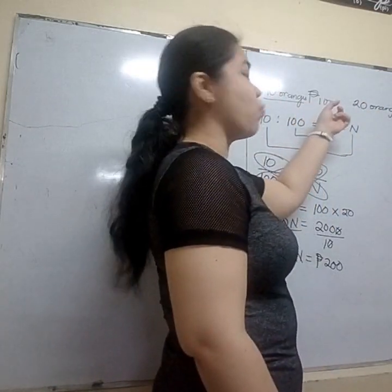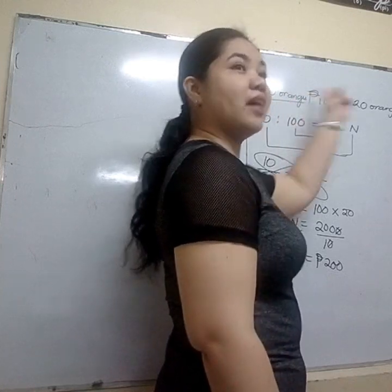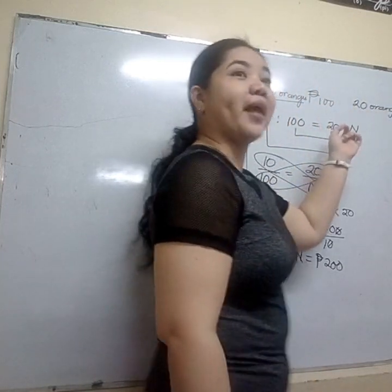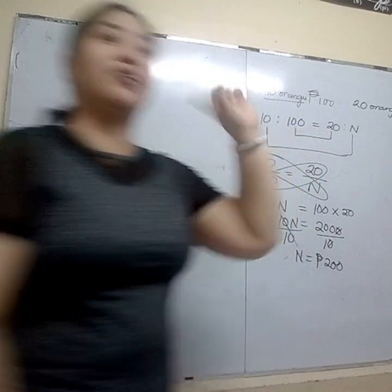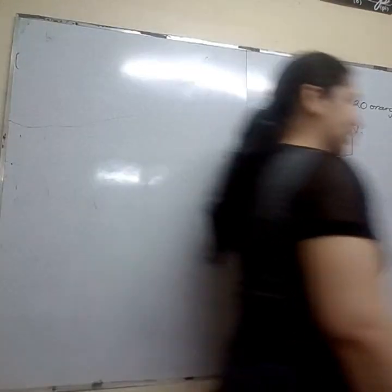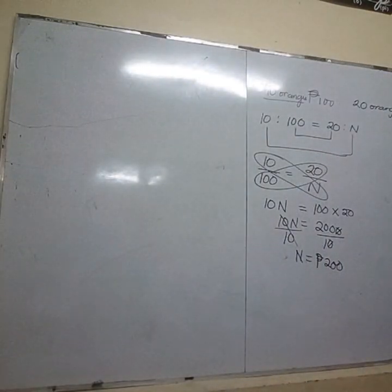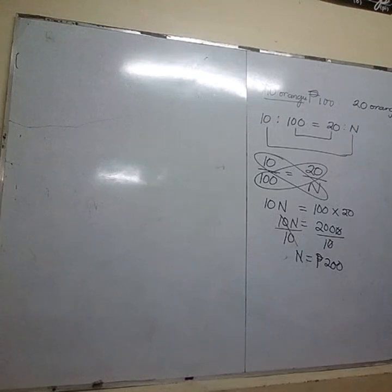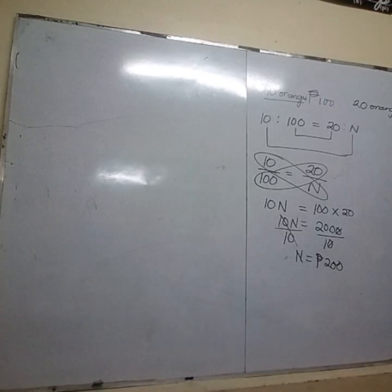The value increased — that's how direct proportion works. How about indirect? They are opposite of each other. So let's take this as an example.